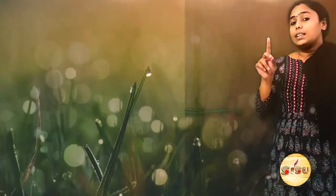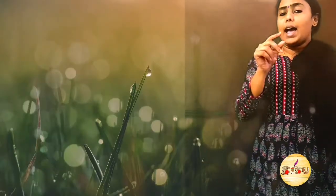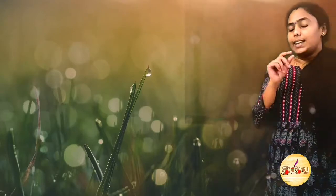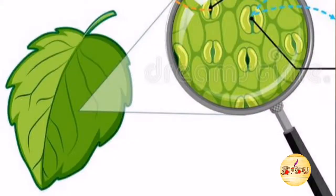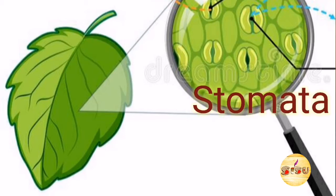Now let us think about plants. Plants also have some organs for breathing. Look at this leaf — you can see small holes. Those holes are called pores, and you can't see them with your naked eye. When you observe under a microscope, you can see those holes clearly, and they are known as stomata.